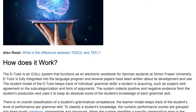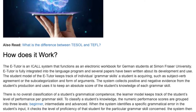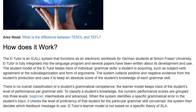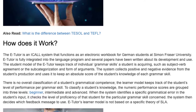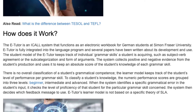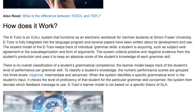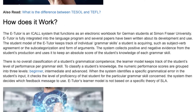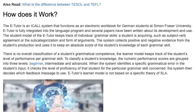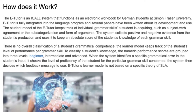The student model of the eTutor keeps track of individual grammar skills a student is acquiring, such as subject-verb agreement or the subcategorization and form of arguments. The system collects positive and negative evidence from the student's production and uses it to keep an absolute score of the student's knowledge of each grammar skill. There is no overall classification of a student's grammatical competence; the learner model keeps track of the student's level of performance per grammar skill.